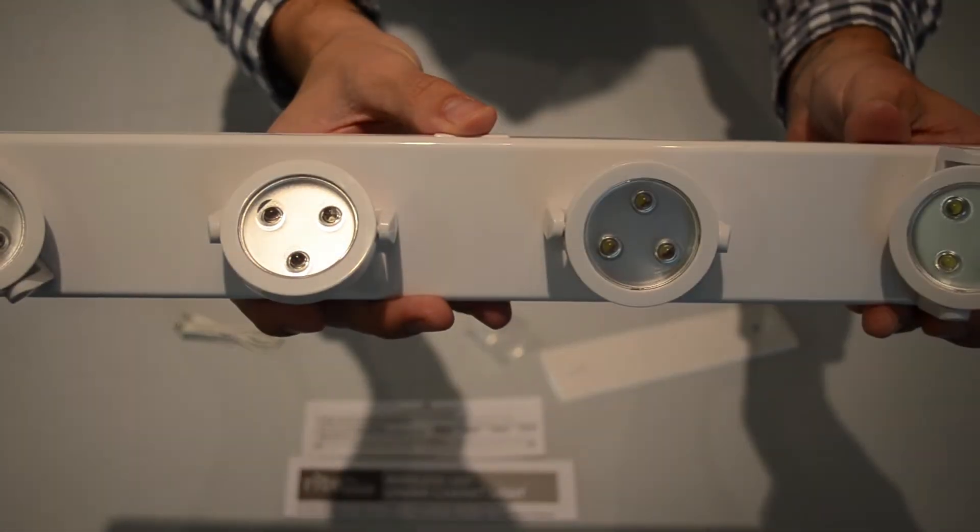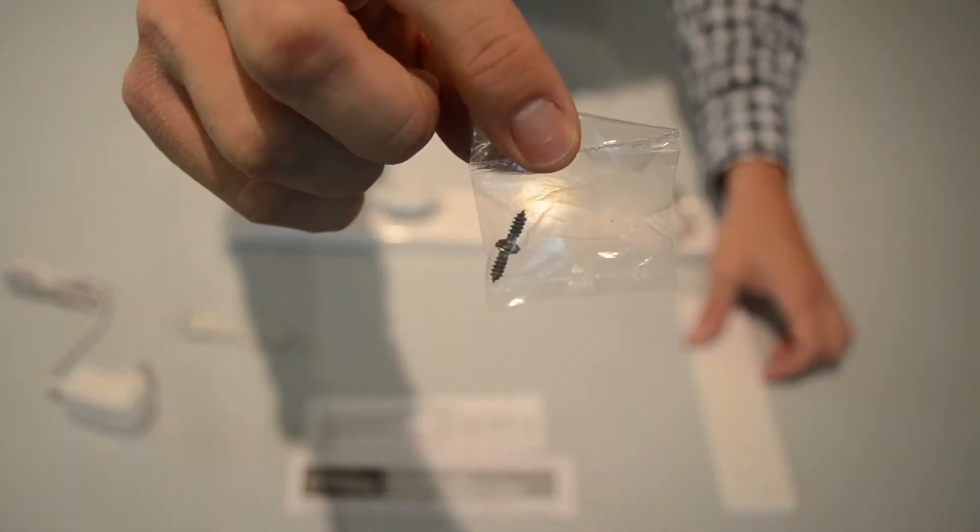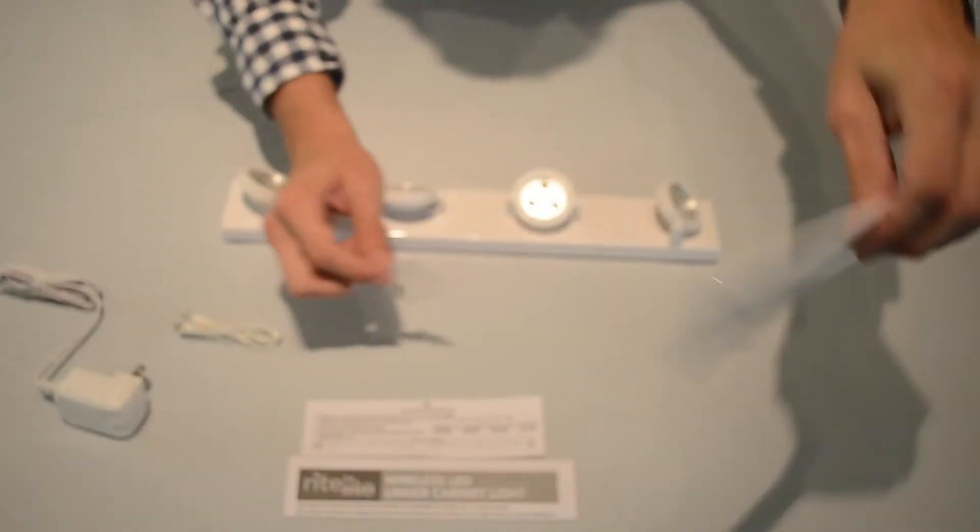Installation, either for ceiling or wall track lighting, is easy with either the included hook and loop tape or screw mount bracket.